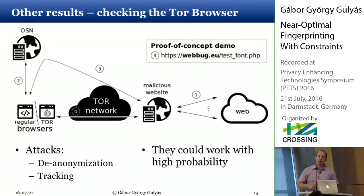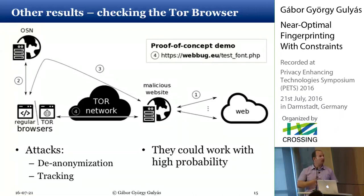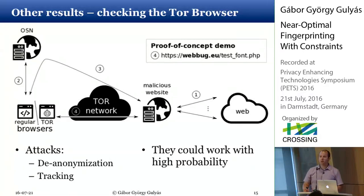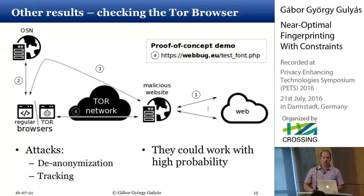We found when we started this analysis last November that the font limitation was not working at all in Tor — basically all fonts on a computer could be detected and used for tracking, since fonts are a very good entropy source. This was finally patched in January with Tor Browser 5.5, which ships with a bundled font set used for web browsing to protect users.